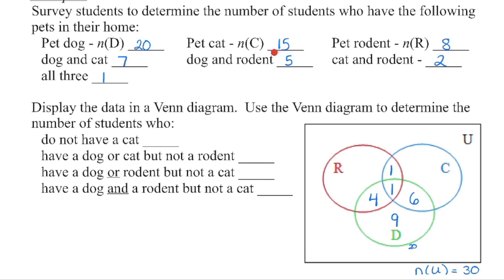We have 15 students in the cat circle, so we can put a little 15 here. We can see that we already have 6, 7, 8 students in there — so there are 7 students who have only a cat. And then we have 8 students with a pet rodent — that's the whole red circle, so I'll put a little 8 here. There are 4, 5, 6 students already in that circle, so there are 2 students who have a rodent only.